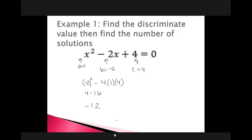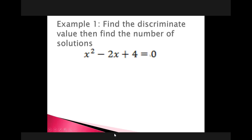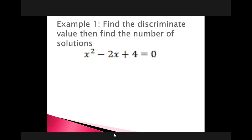Since the discriminant is negative 12, this means we have two imaginary solutions. When we plug this into the quadratic formula, we're going to get a negative under the square root, which means we're going to get an i in our answer. That also means that if we were to graph this, the graph would never cross the x-axis — it's shifted up and does not cross the x-axis. When you get imaginary solutions, it's telling you that the graph is not hitting the x-axis.